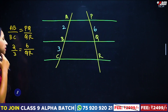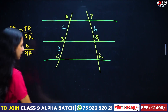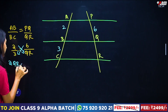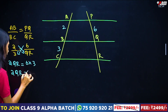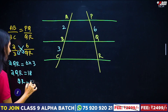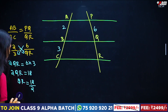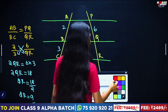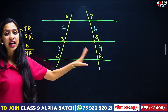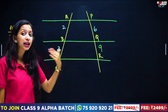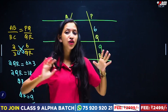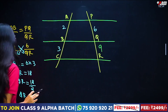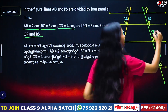Solving for QR: 2 by 3 equals 6 by QR, so QR equals 18 by 2, which is 9. Therefore QR equals 9.